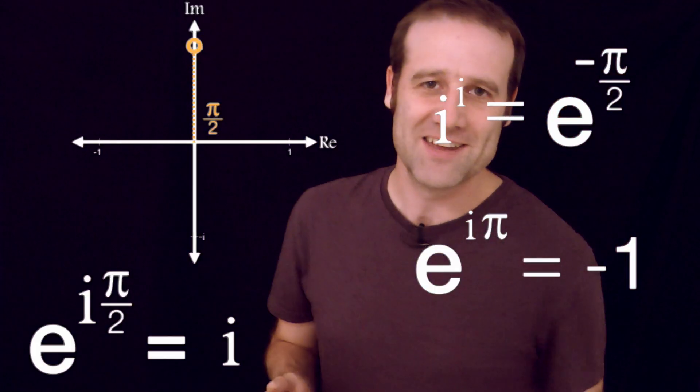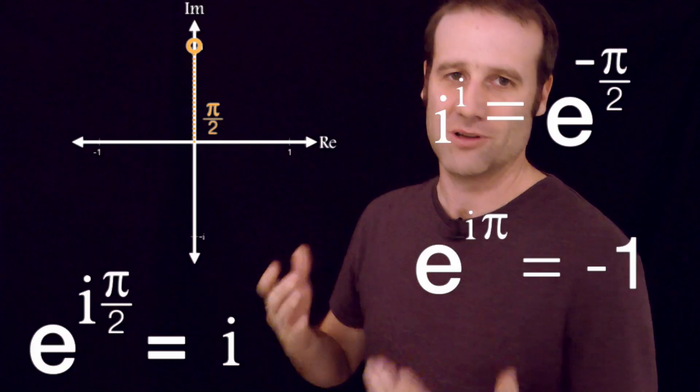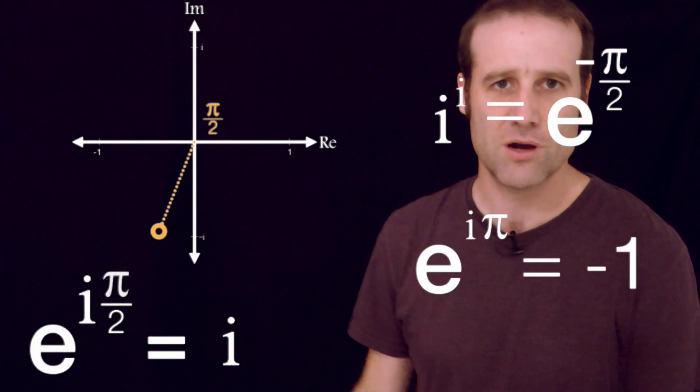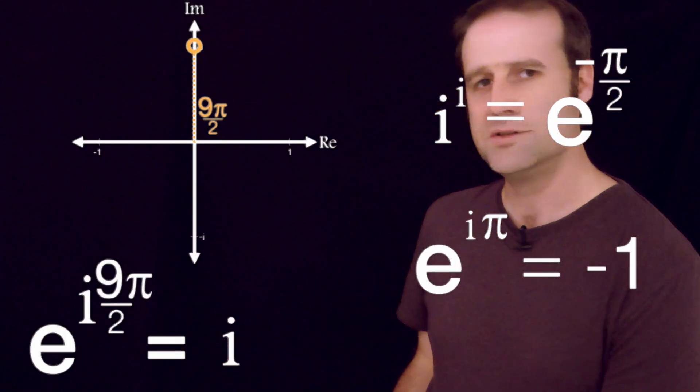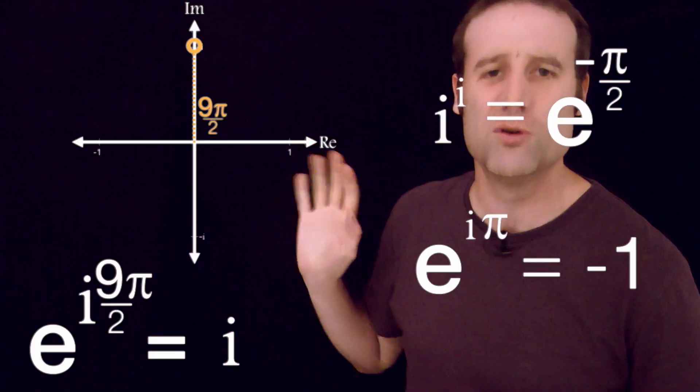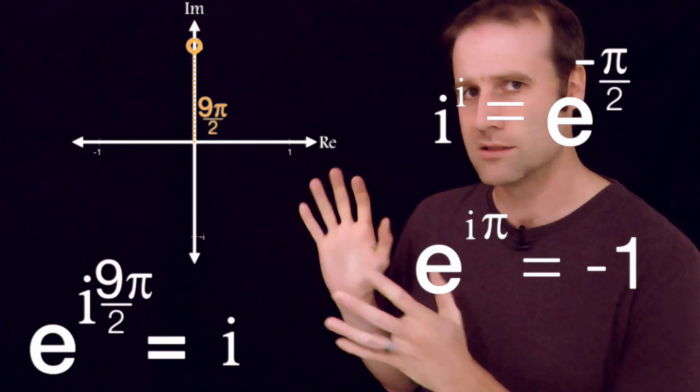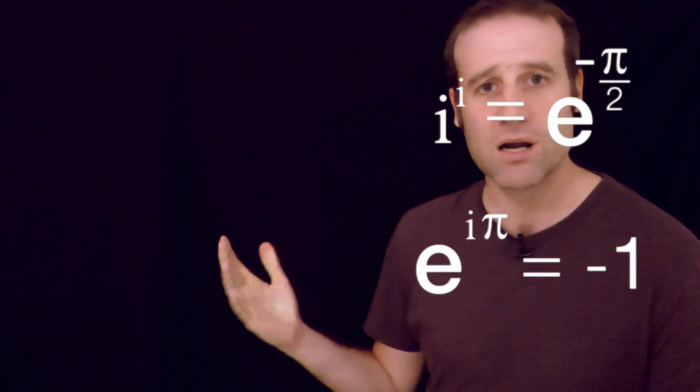So people are already yelling at their screens. I didn't point out because of the way I did the natural log of i, it's got more than one valid result as well as pi on 2. I could have used 5 pi on 2. I could have used 9 pi on 2. There are loads, infinitely many some would say, options. And the solution here, when it comes to this little problem is... Don't worry about it. It's about a fifth.